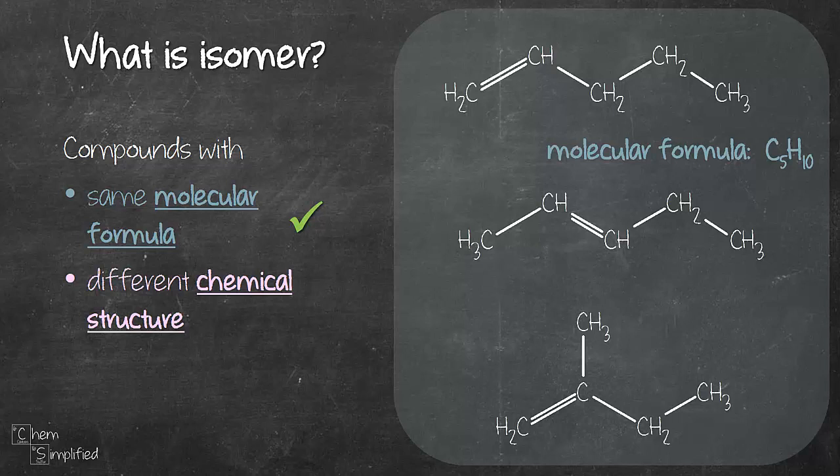The second structure has a double bond but it's not between the first and a second carbon. Instead it's between the second and a third carbon. Whereas the third structure, the double bond is between the first and a second carbon but it's different from the first compound because there is a CH3 group at the second carbon. So notice these differences. And because of these differences, each of these compounds have different chemical structure. They have the same number of atoms which means they have same molecular formula but they are drawn out differently. They are connected differently and that's why they have different chemical structure.